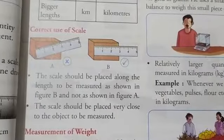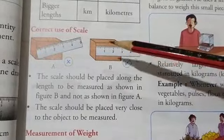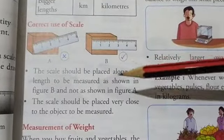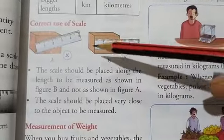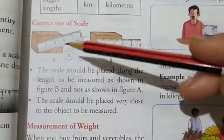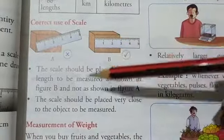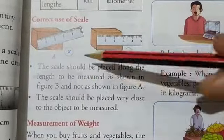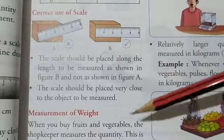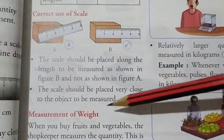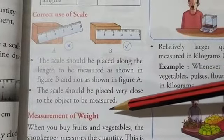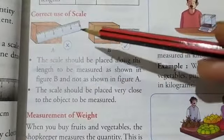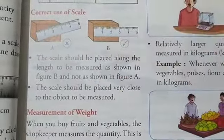Next is how we can use a scale correctly or the correct use of scale. So first thing is that the scale should be placed along the length to be measured as shown in figure B and not as shown in figure A. Next is the scale should be placed very close to the object to be measured. It should not be too far from the object whose distance is to be measured.